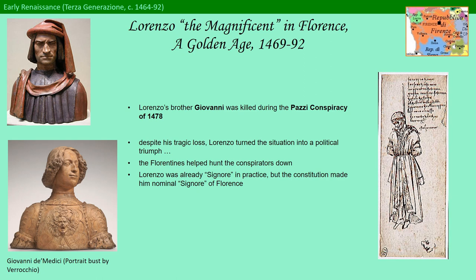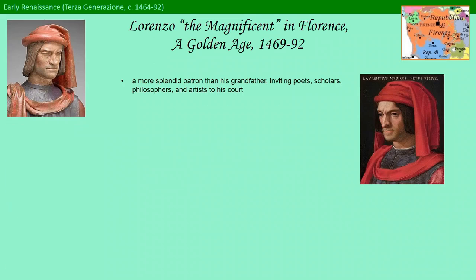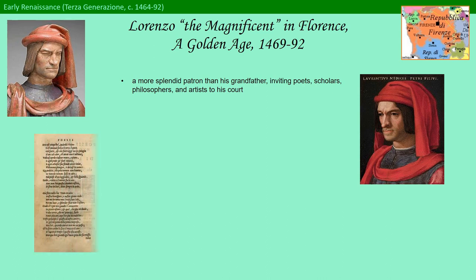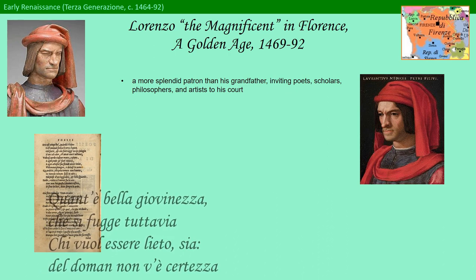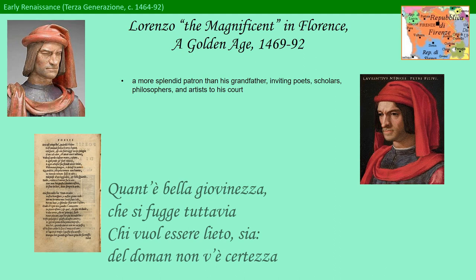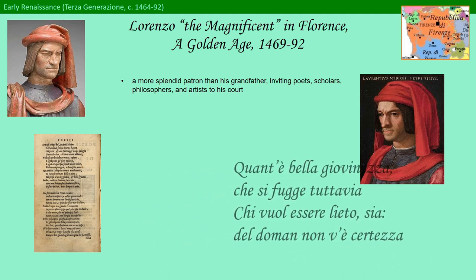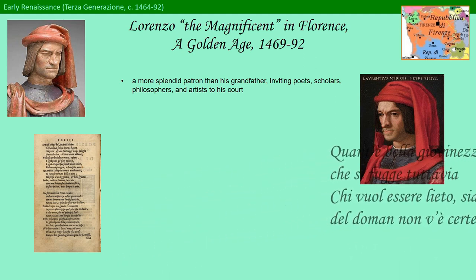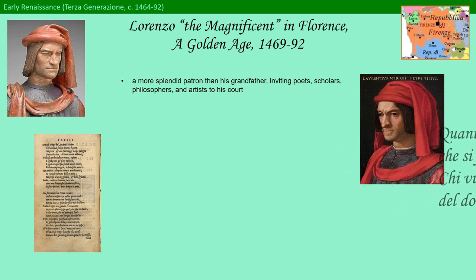Lorenzo further benefited from the situation by becoming the first of the Medici clan to be officially named Signore, or ruler, in the Constitution. He became, perhaps, a more splendid patron than even his grandfather Cosimo. He was a cultivated and refined man who invited poets, scholars, philosophers, and artists to his court. He himself wrote poetry. He was a member of the Neoplatonic Academy and established a taste for objects rich in philosophical significance. He had more personal relationships with artists as well. Michelangelo claimed to have had a place right at the Medici table when he was an adolescent learning the art of sculpture in the Medici garden in the early 1490s.